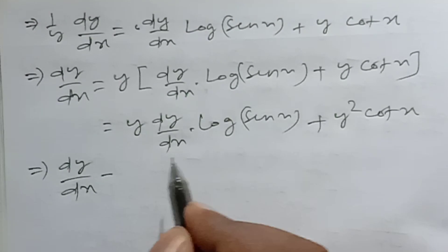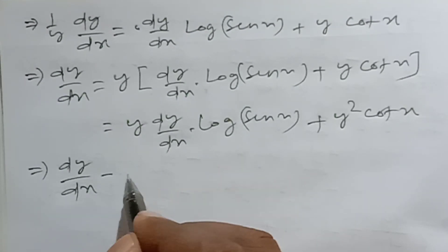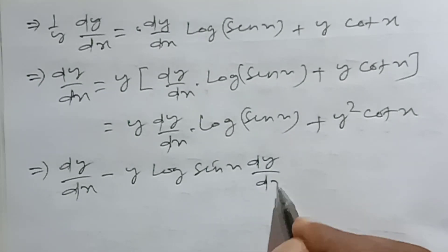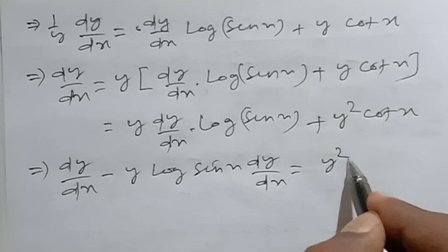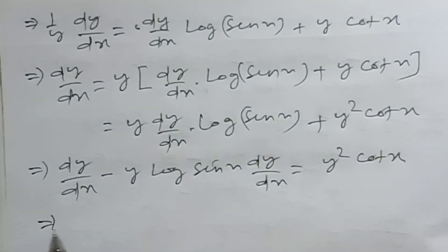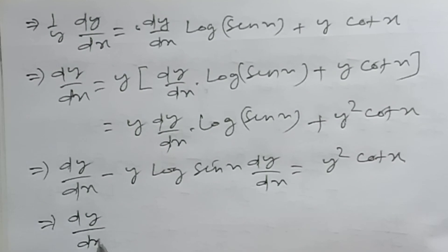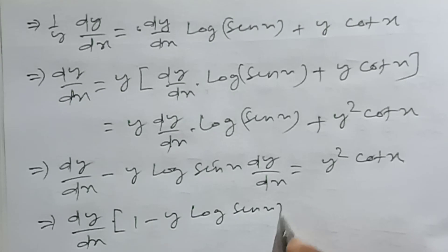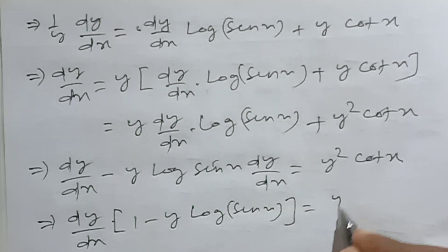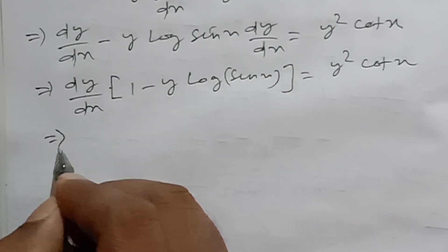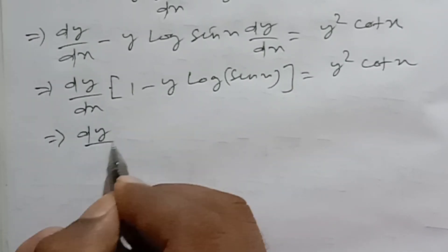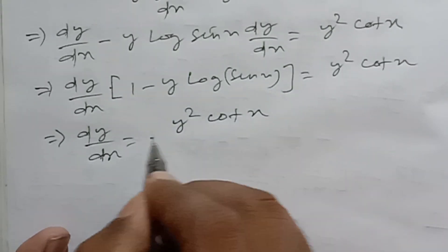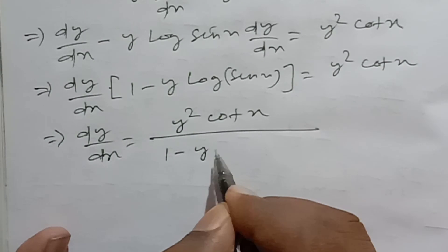Rearranging: dy/dx · (1 − y · log sin x) = y² · cot x. Therefore dy/dx is equal to y² · cot x divided by (1 − y · log sin x). This is the value of dy/dx for the infinite tower sine x.